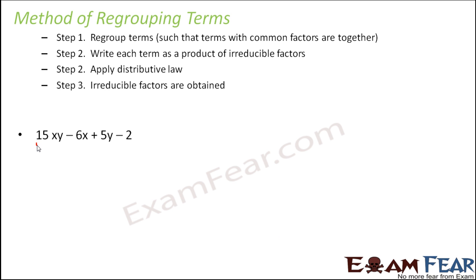If you compare 15xy with 5y, you see 5 into 3 is 15, so 15xy has more in common with 5y. Similarly, 6x and 2, since 2 into 3 is 6, so 2 is a common factor. These two have more in common. So let us put these two terms together and these two terms together. This is the most important step in this method.